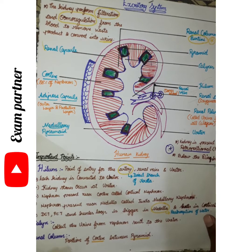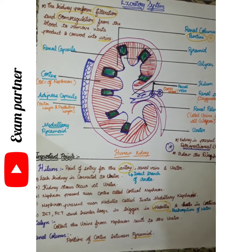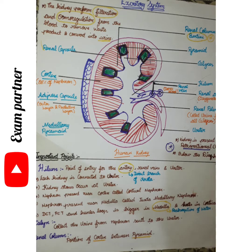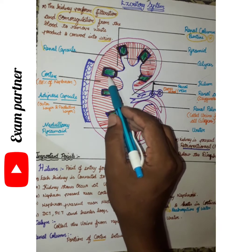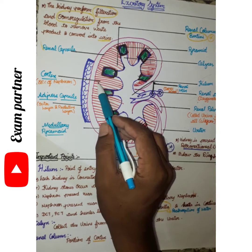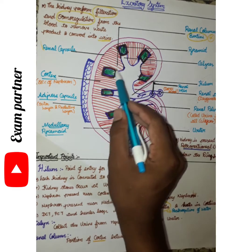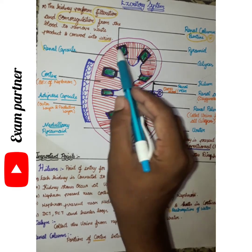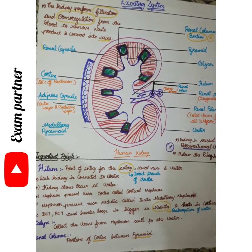The renal column of Bertini is present between the cortex and the medullary pyramids. This is the renal column of Bertini. This is the medullary pyramid. The renal column of Bertini separates the medullary pyramids.